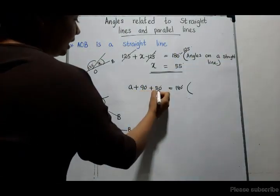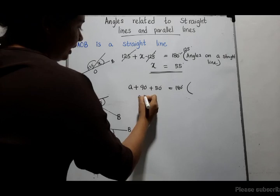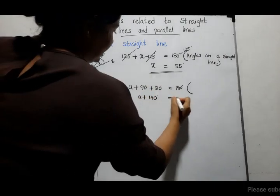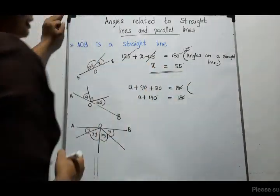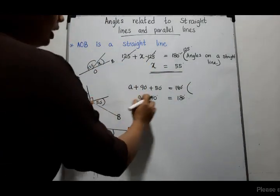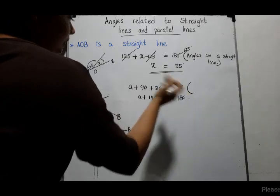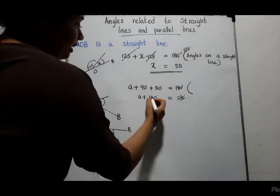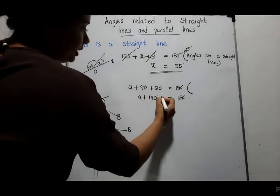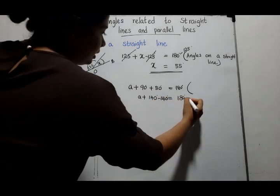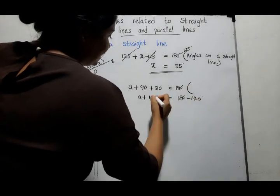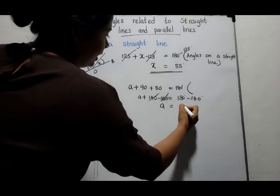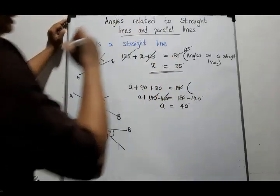These are like terms, so we can add: A plus 140 degrees equals 180 degrees. To find A, we subtract 140 degrees from both sides. Therefore, A equals 40 degrees.